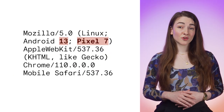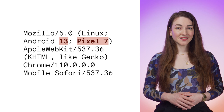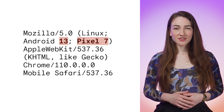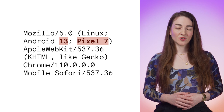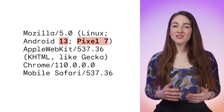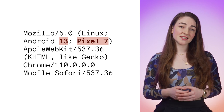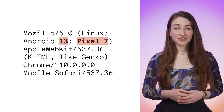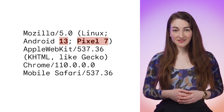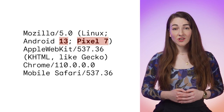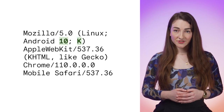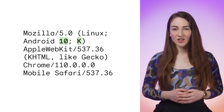Starting in Chrome 110, we're going to start gradually introducing a fixed value for Android version and device model. So instead of seeing something like Android 13 on Pixel 7, the default value will always be Android 10 on Model K.